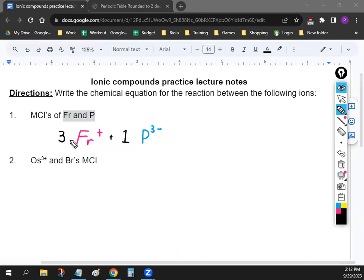So we'll need a total of three Frs and one phosphorus. So that's how we write the chemical equation. That's the left side. So our starting chemicals are three Frs and one P. That's what we covered last time.